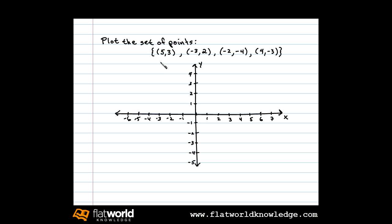We plot points in the rectangular coordinate system using the coordinates of the ordered pairs. Here x is 5 and y is 3. The coordinates represent position relative to the origin.